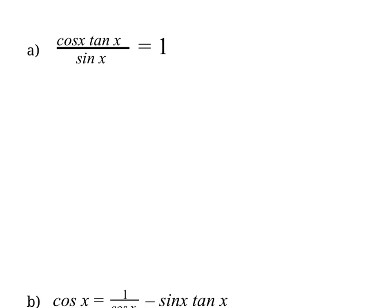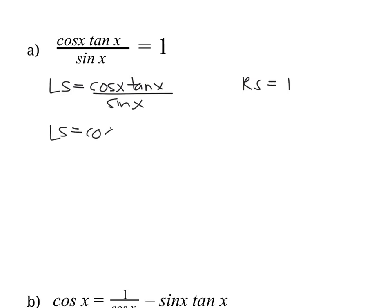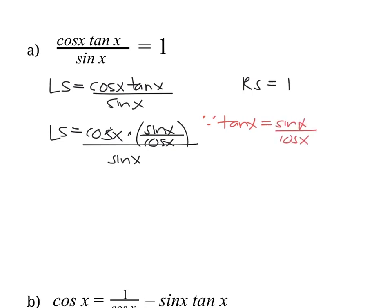Our first example: prove that cos x · tan x / sin x = 1. Let's break it into the left side and right side. The left side is (cos x · tan x) / sin x, and the right side is 1. There's nothing to simplify on the right side. Using the strategy of changing everything in terms of sine and cos, we can replace tan x with sine x / cos x. So the left side becomes cos x · (sin x / cos x), all over sin x.